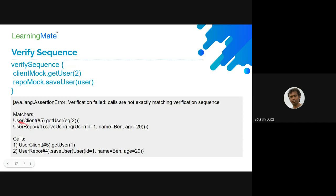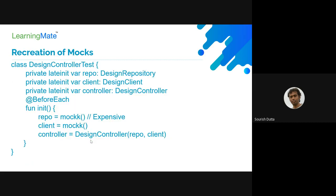So in the verify sequence, what you are doing is verifying the order in which the mocks are called. The matcher mock object is equal to 2, but your call is happening with get user 1 - a different user object. This way we can easily identify where the error is: what is my expectation and what is the actual sequence of calls happening.